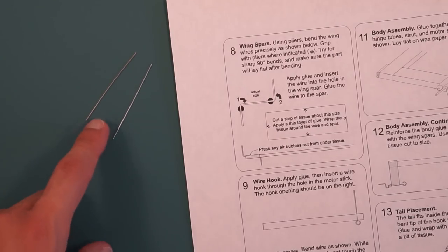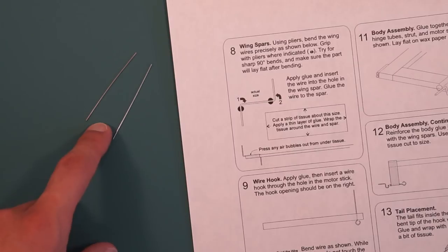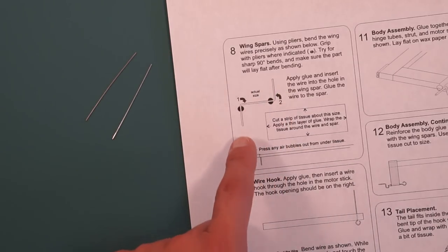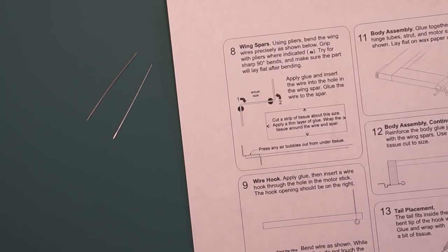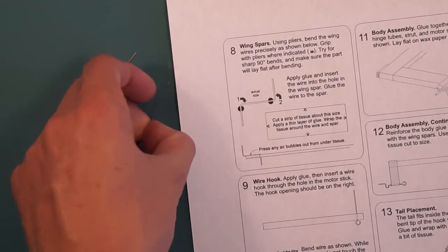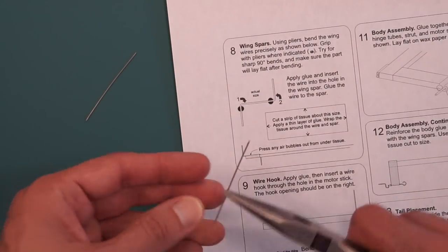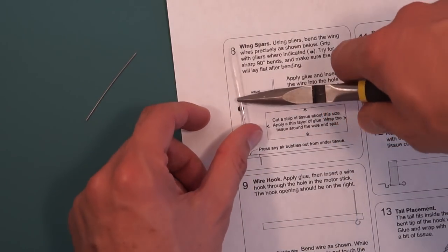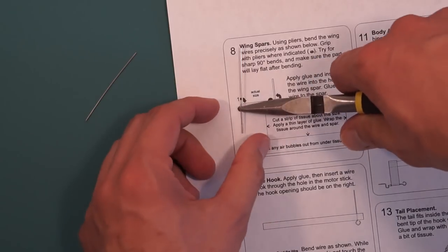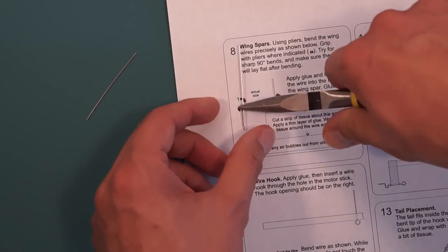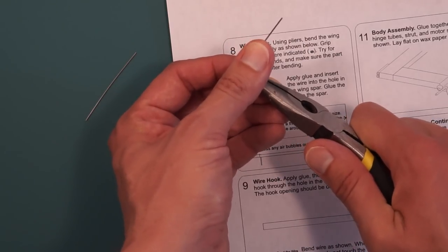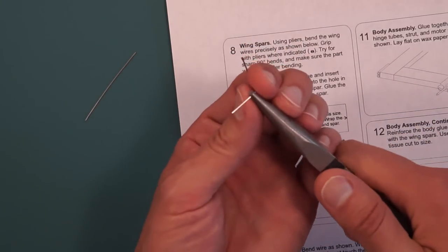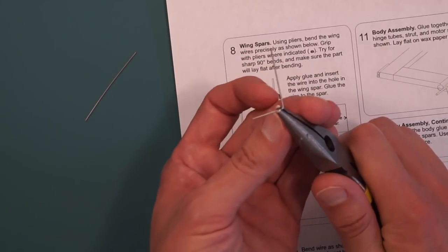Next we'll bend the wire pieces that hold the wings in place. You can bend it right on the plan sheet here. The important thing is this middle part should be seven eighths inches. So we'll line this up about the way it shows on the diagram. Bend the wire. Make sure you get a nice 90 degree angle there.